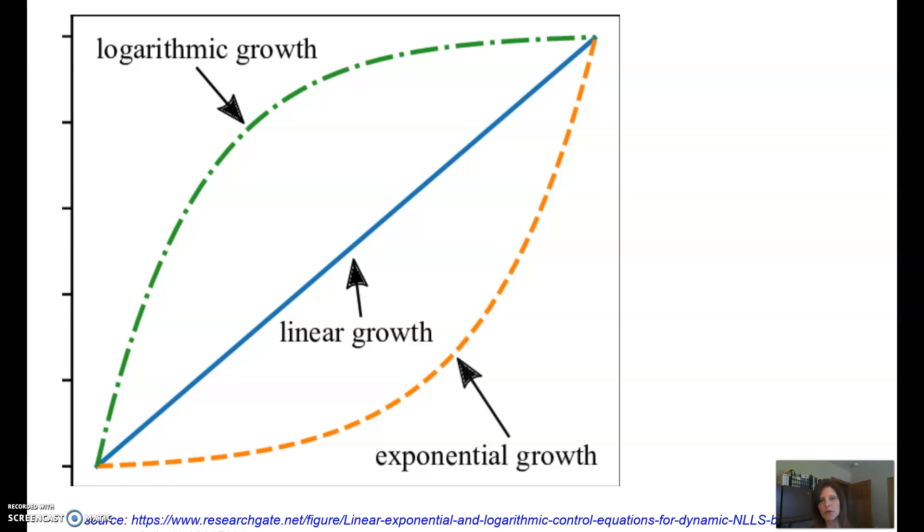Exponential growth is a constant rate of growth over time. An example you're familiar with there is cell growth. We start as one cell, but then that one cell doubles and becomes two. That's 100% growth. Then those two become four.